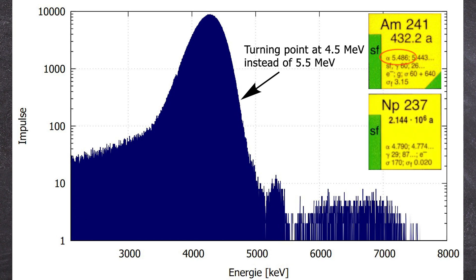Interestingly, the daughter nucleus neptunium-237 has the exact alpha energy of 4788 keV. So I initially thought it was the daughter nucleus that we were seeing, but it's actually americium coincidentally shifted the same way that we would have seen the neptunium.